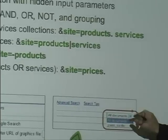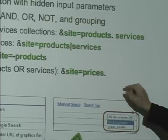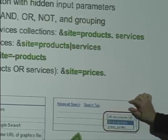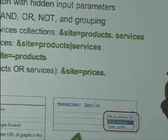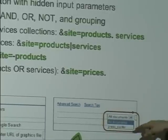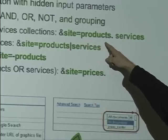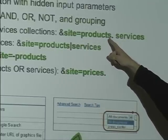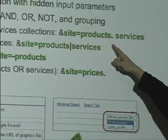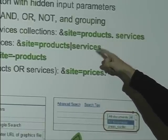You may want to provide a link that — instead of 'press center' — maybe just a link. They click on that link and it sends a GET request to the GSA with a hidden input parameter called the 'site' parameter. You can have 'site' set to one collection, or set to multiple collections so that results have to appear in both the products collection and the services collection — that's the dot operation for AND.